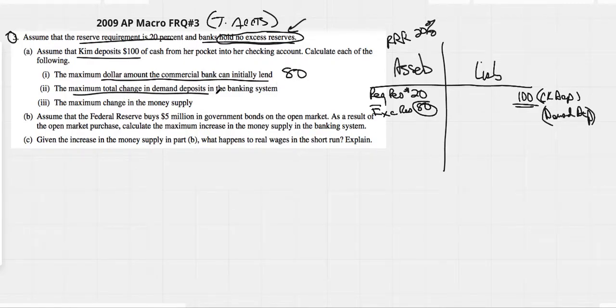The total change in demand deposits in the banking system. Easiest way to do that is just know it's the $100 times your money multiplier. Your money multiplier is 1 over the 20% or 1 over 0.2 or we could just say it's 5. How many times does 20 cents go into a dollar? Five times. So 5 is our money multiplier. We could see our demand deposits over the whole banking system would be $500.